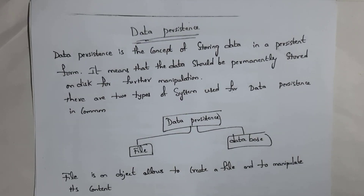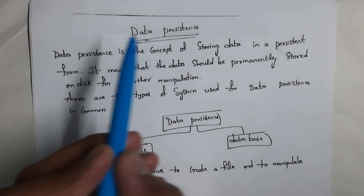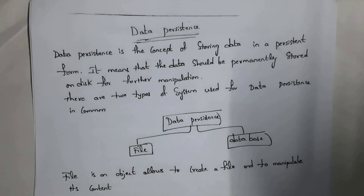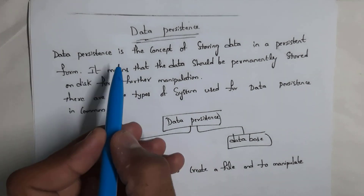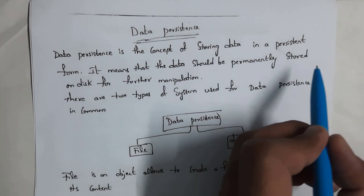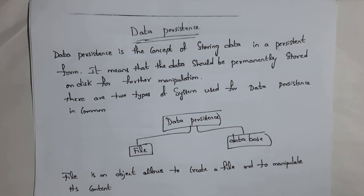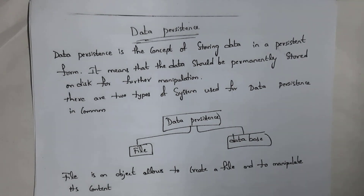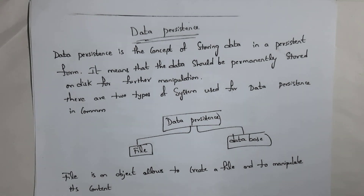First, I will explain what is persistent data. Data persistency is the concept of storing data in a persistent form. Data which is stored permanently is known as persistent data. It means that data should be permanently stored on disk for further manipulation. Data can be stored permanently by using two ways: first one is by using file, and next one is by using database.